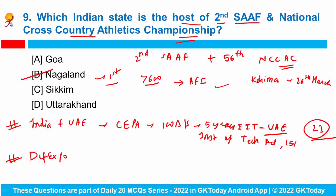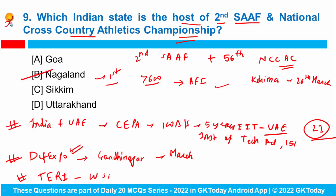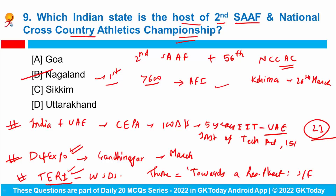DEF Expo is scheduled to be held in Gandhinagar, Gujarat in March — it is Asia's largest defense exhibition. TERI has also recently hosted the latest edition of the World Sustainable Development Summit. TERI stands for The Energy and Resources Institute, and the theme for this event was 'Towards a Resilient Planet: Ensuring a Sustainable and Equitable Future.'